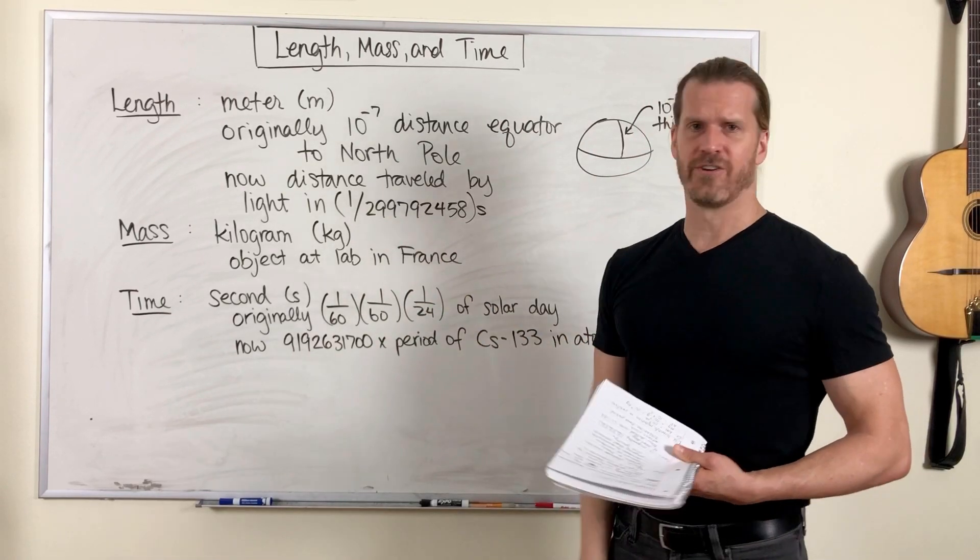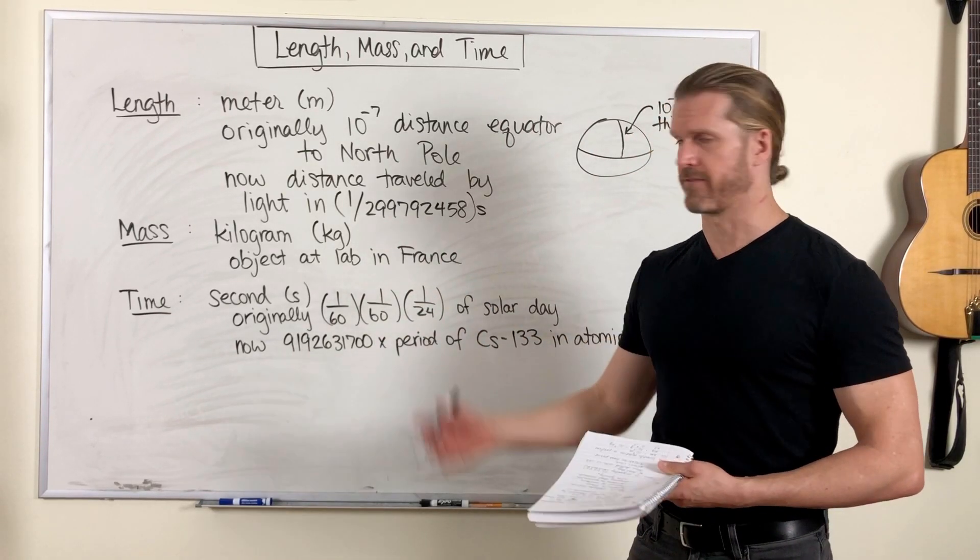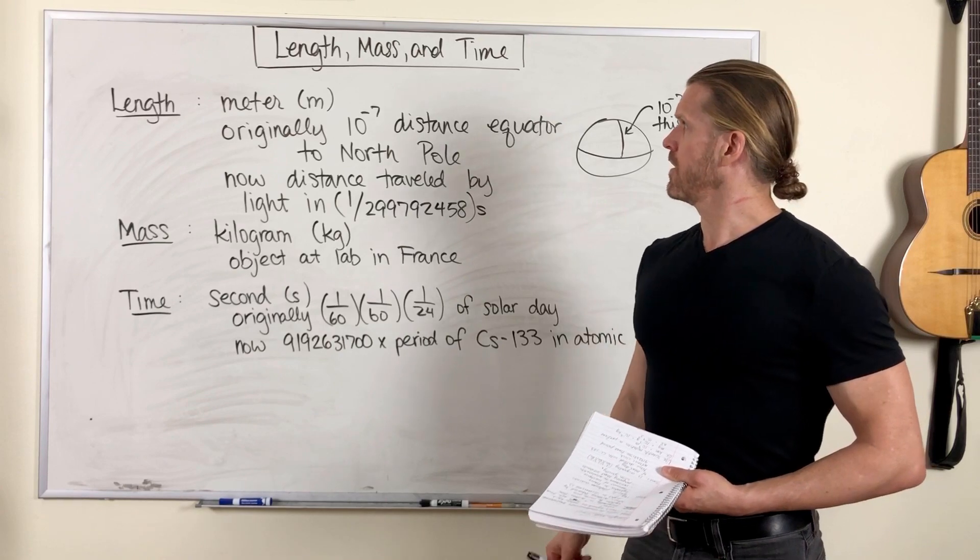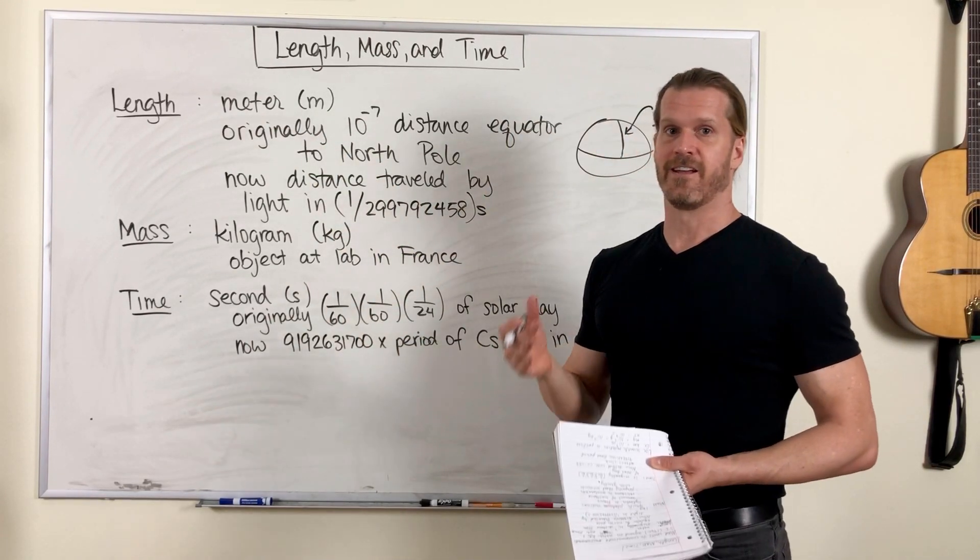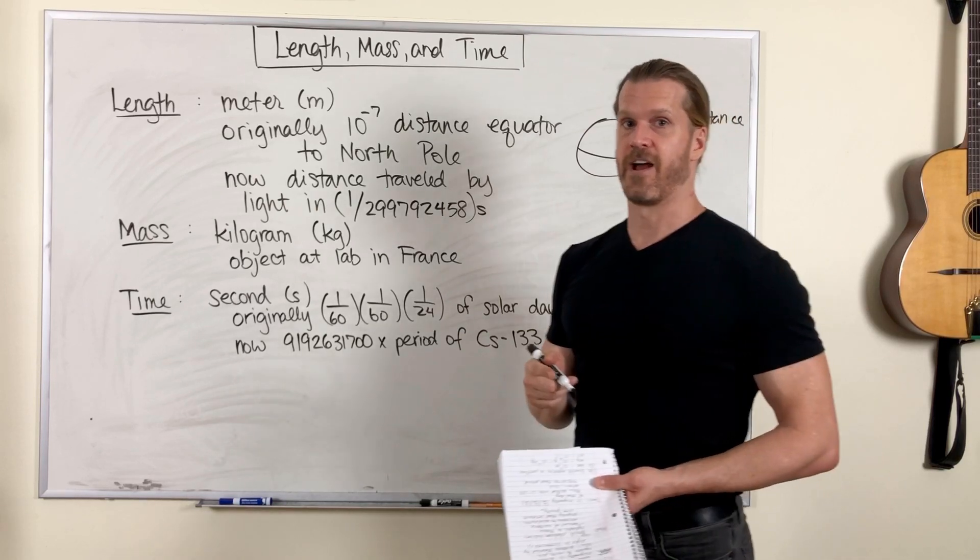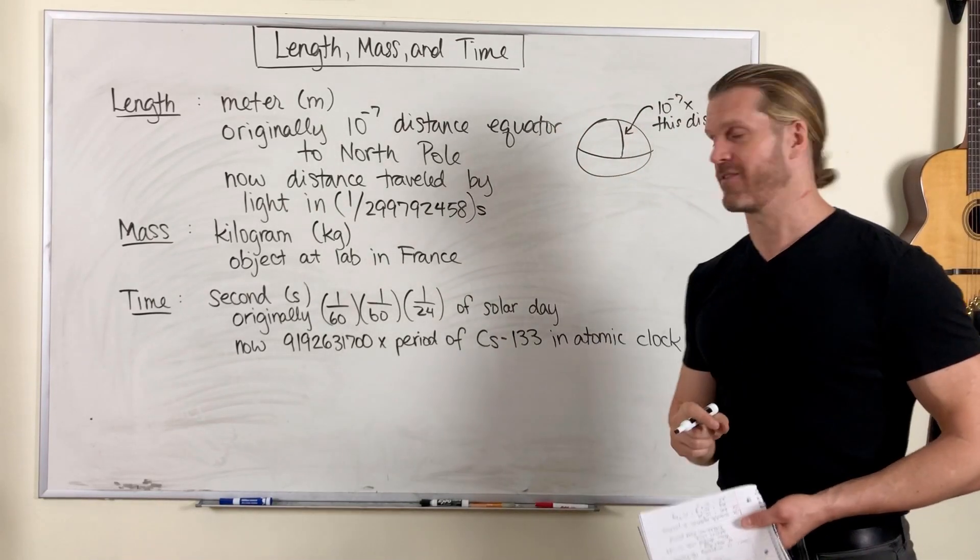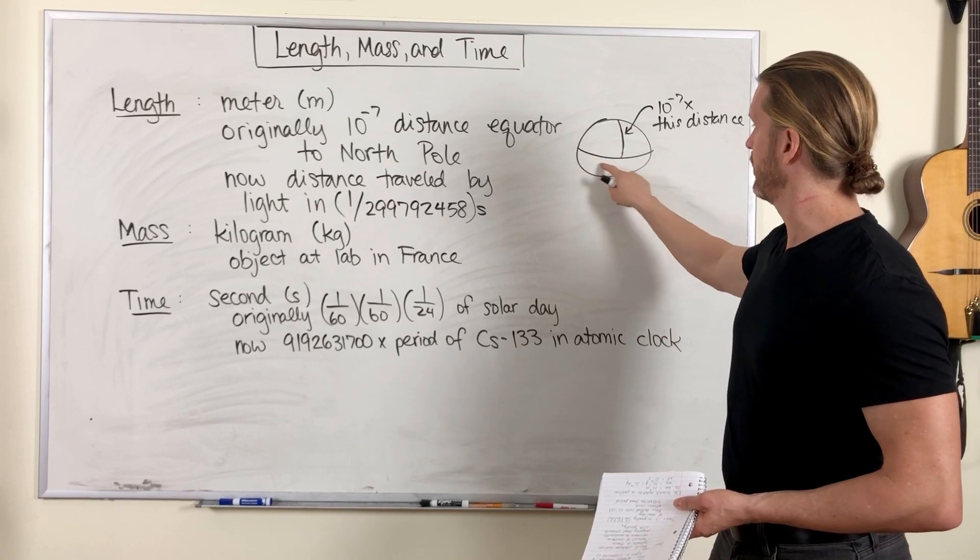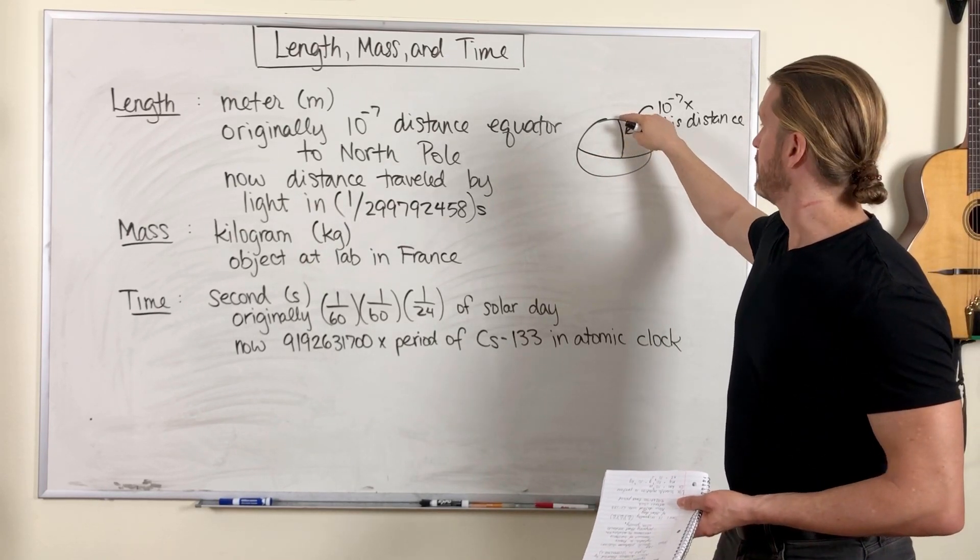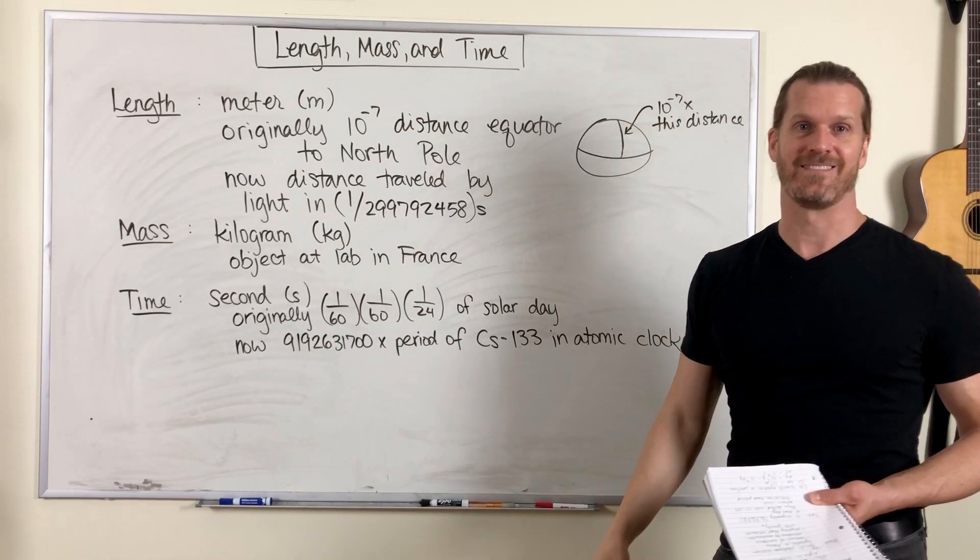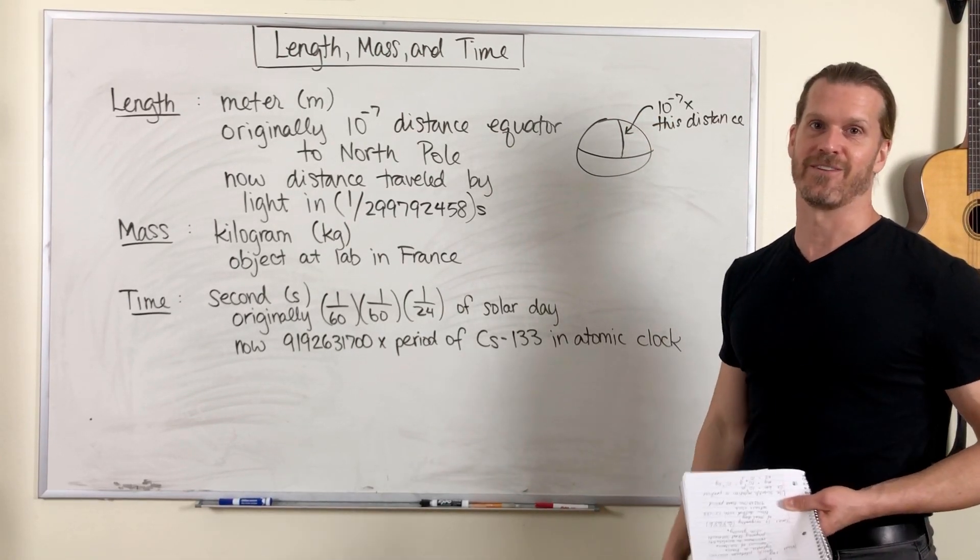So how do we define a unit of length? The unit we use is called a meter, and a meter was originally defined as one ten-millionth of the distance from the Earth's equator to the Earth's North Pole. So if you took this distance and divided by ten million, that was the original definition of a meter.